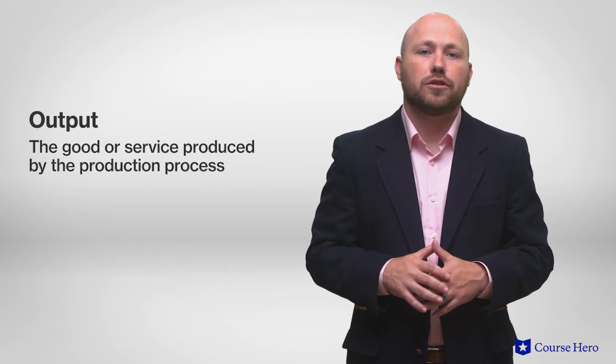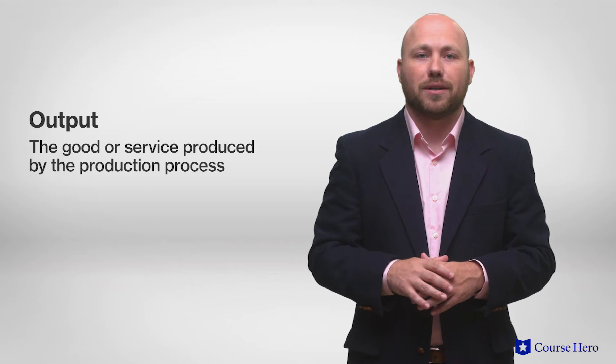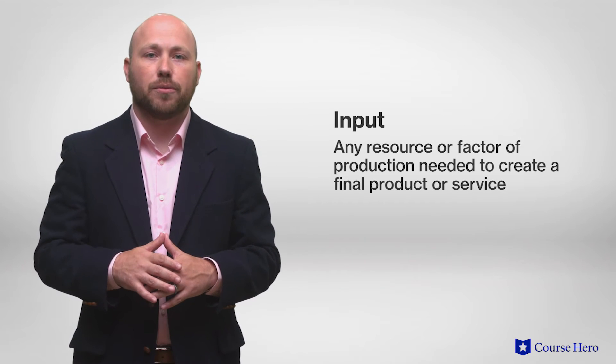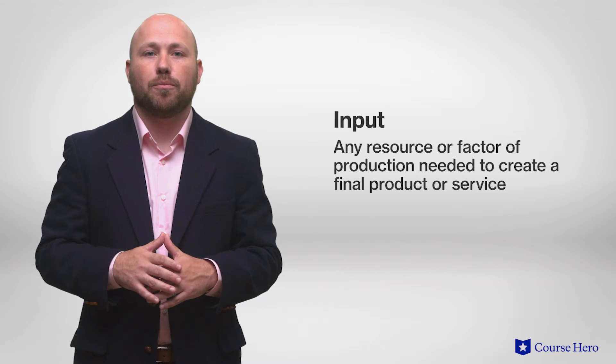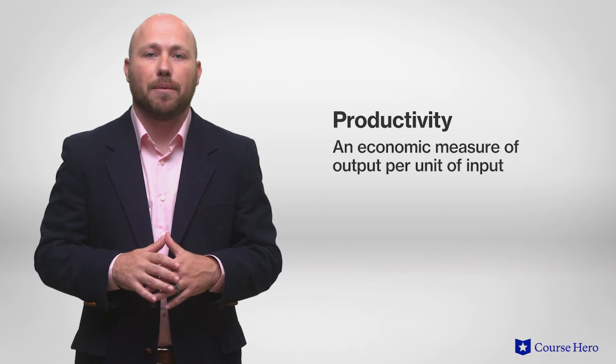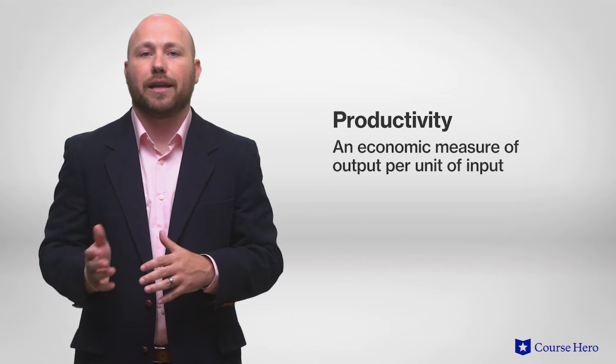An output is a good or service produced by the production process. The producers with the highest level of productivity can be determined by comparing the inputs each needs to produce a single unit of output. Inputs are any resources or factors of production needed to create a final product or service. Productivity is an economic measure of output per unit of input, including capital and labor. The producer that can produce one unit of output with the fewest inputs is the most efficient, and that producer is said to have an absolute advantage.